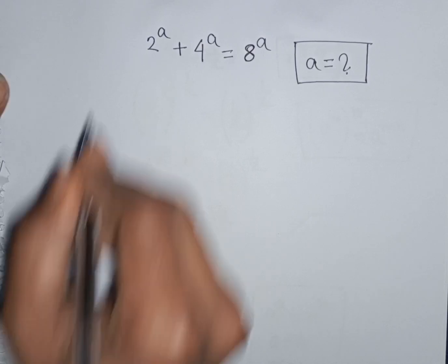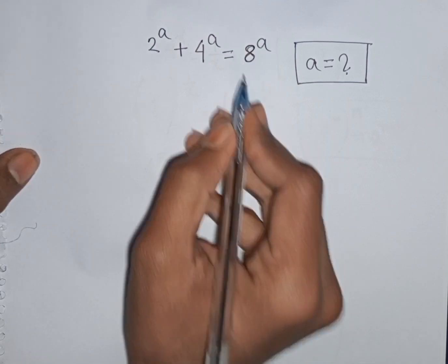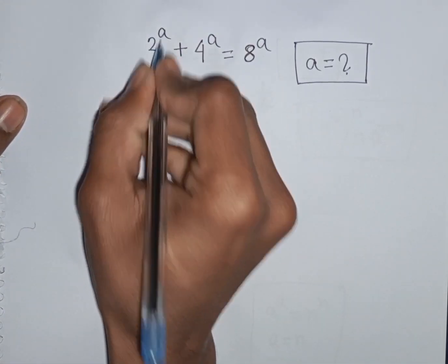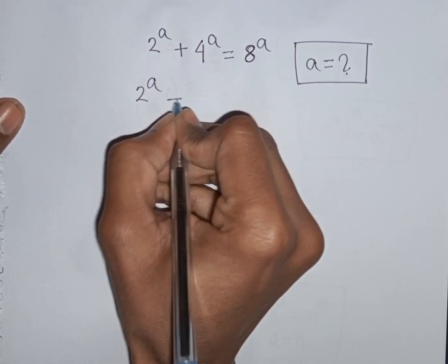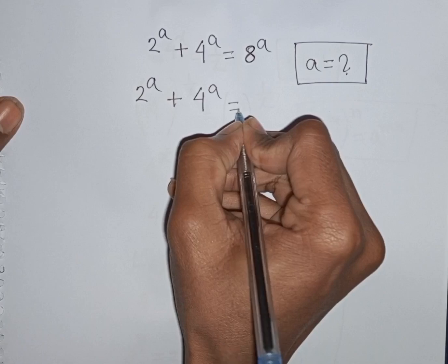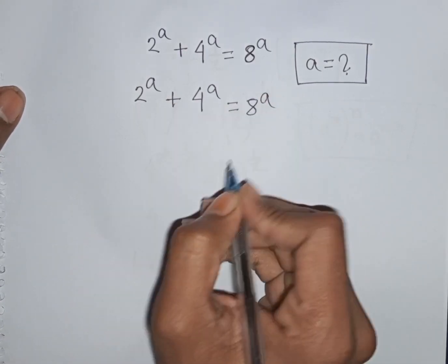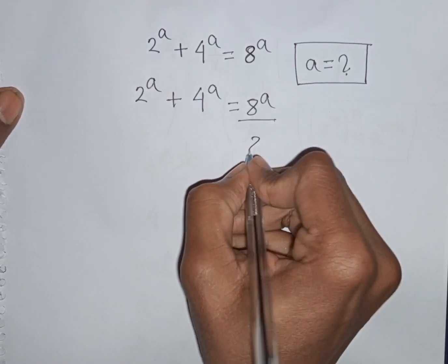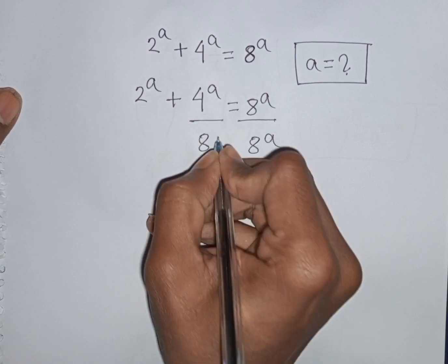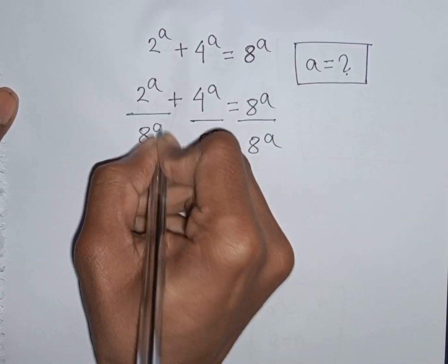How to solve 2 power A plus 4 power A is equal to 8 power A. Find the value of A. So we have 2 power A plus 4 power A is equal to 8 power A. Now we divide both sides by 8 power A.